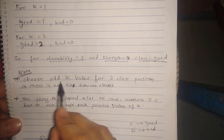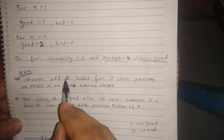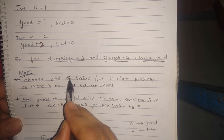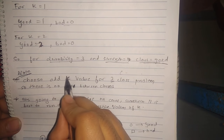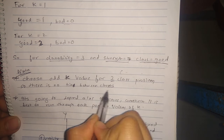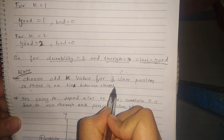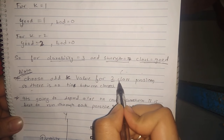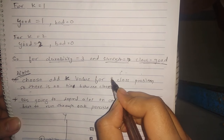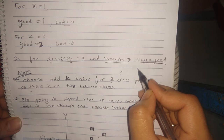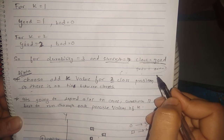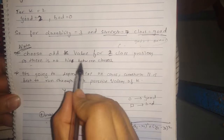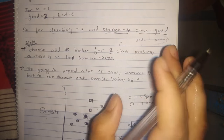An important note: for a two-class problem — here the two classes are good and bad — you should choose an odd value of k so there is no tie between classes. For example, if k = 2 (even) and the good count is 1 and bad count is 1, there will be confusion. Choosing an odd k gives better classification, though this may not hold true in all cases.